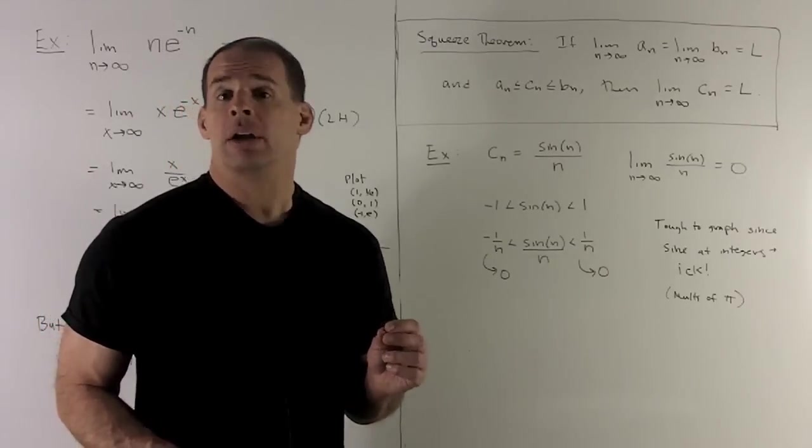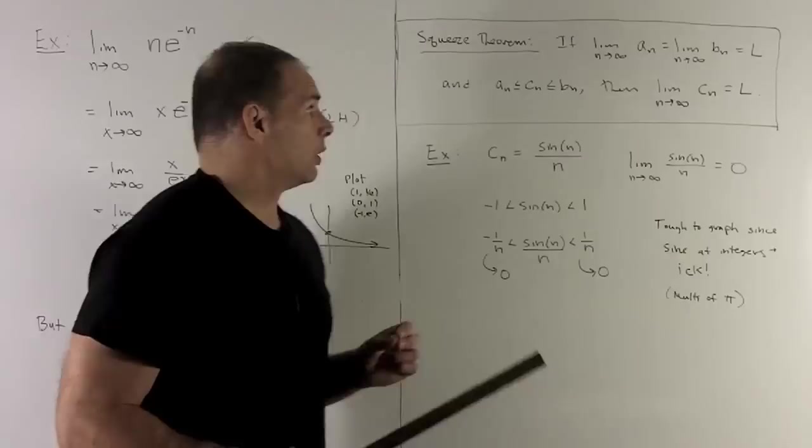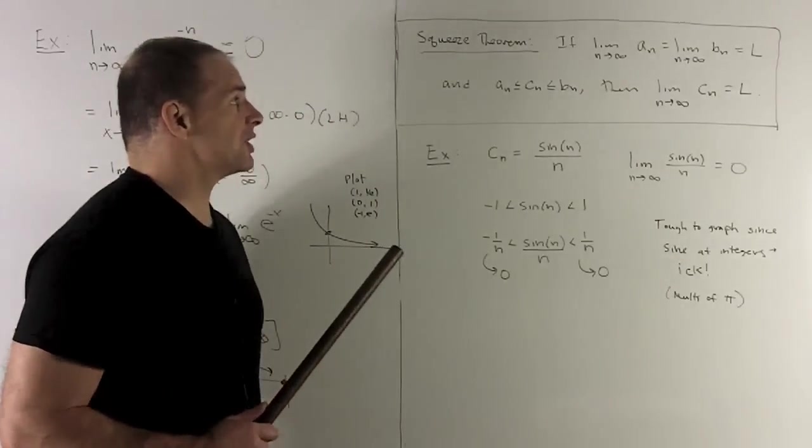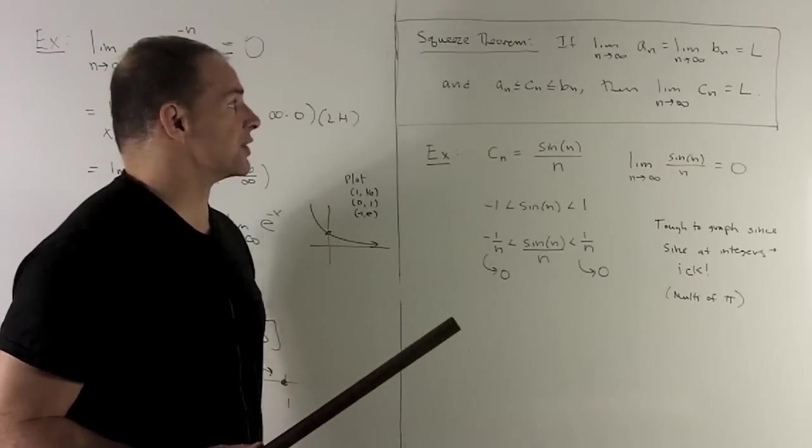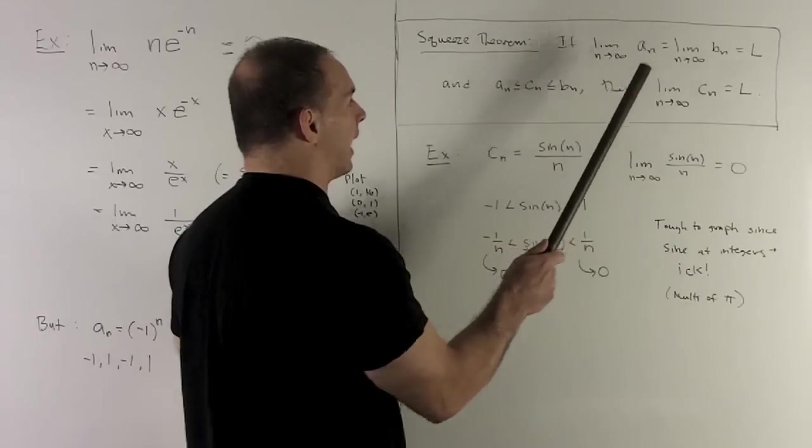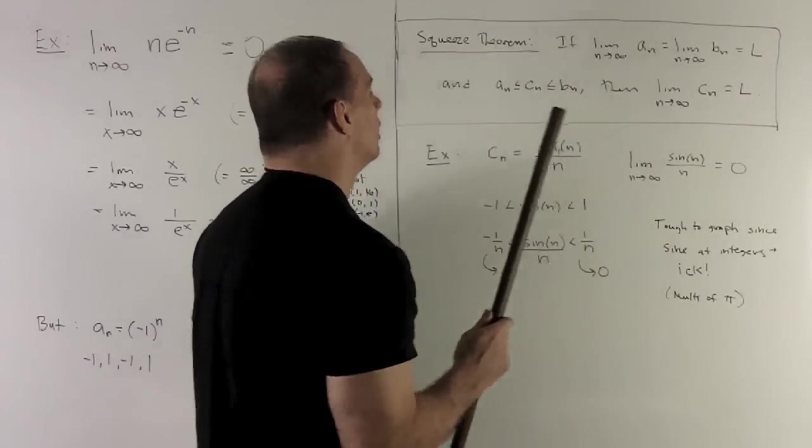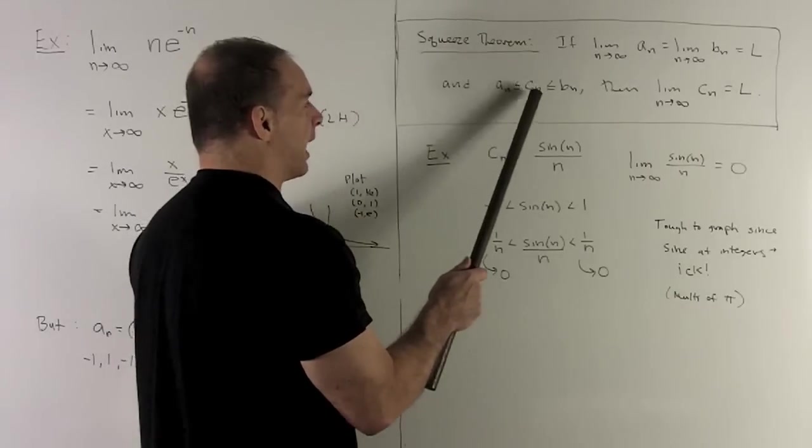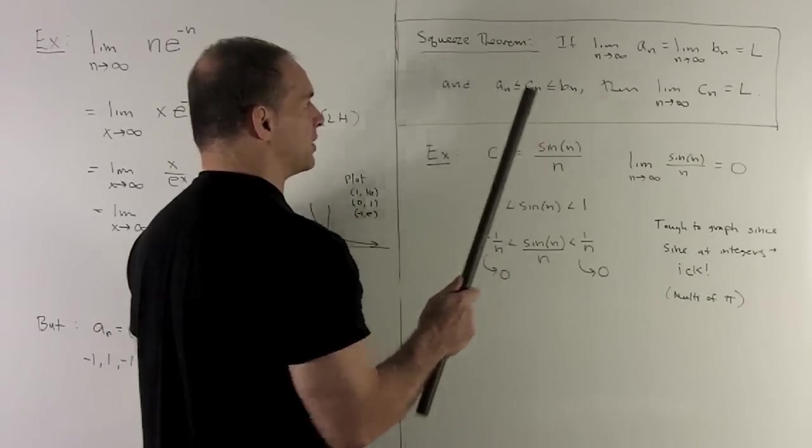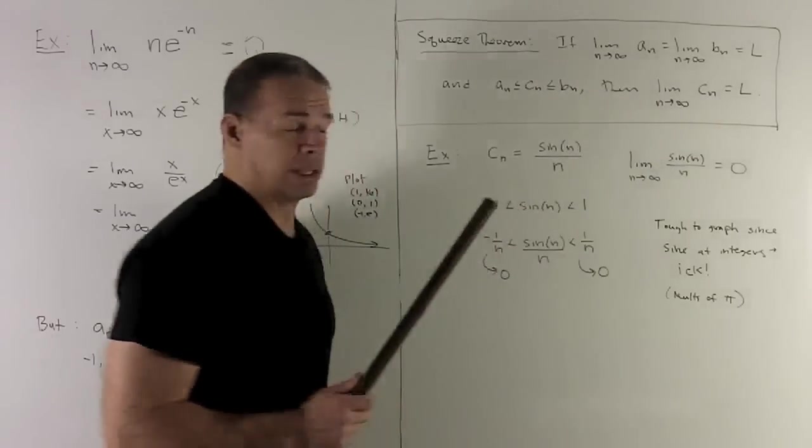We have more theorems we could pull from what we know about functions. We have our squeeze theorem for functions. We're now going to have it for sequences. So the idea is if the limit as n goes to infinity of a sub n and the limit for b sub n are equal to L, if I have a c sub n, which is always between a sub n and b sub n, then the limit of c sub n is also going to be equal to L. So let's see how we can make this work.